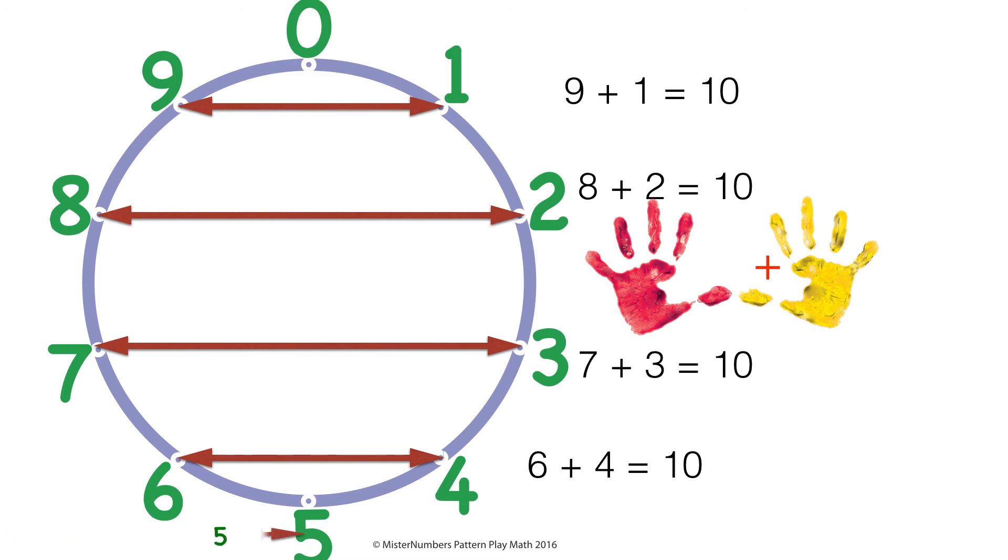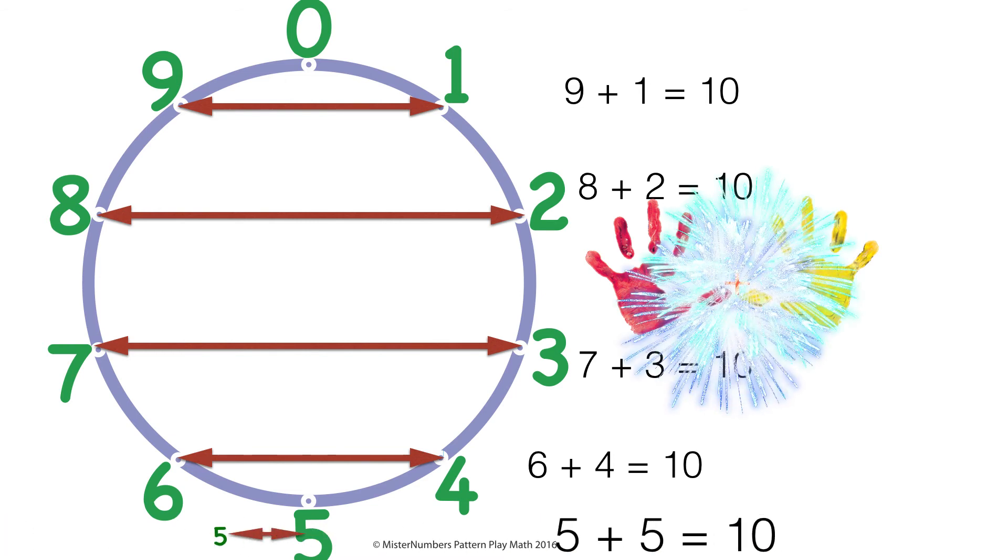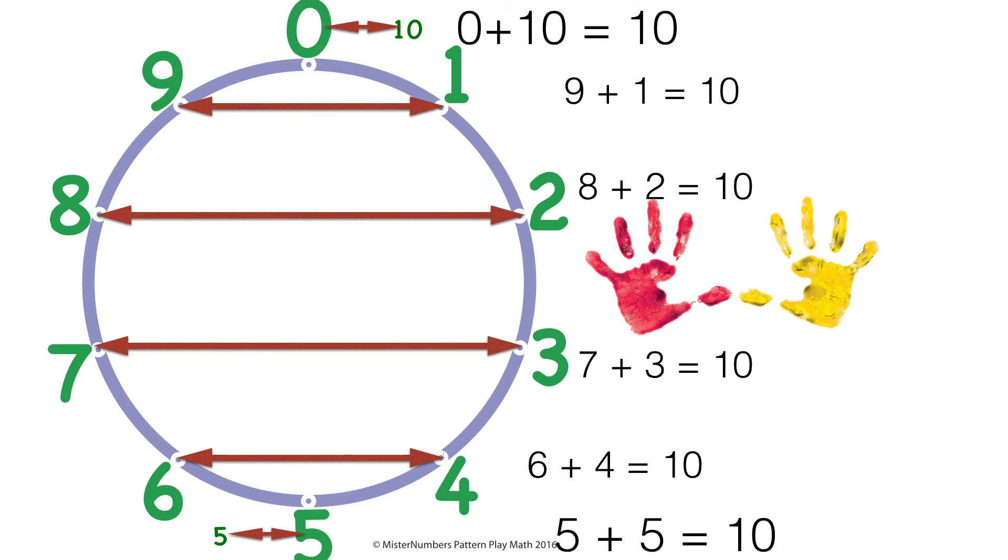Five's all by itself down at the bottom. Well, guess what? Five and five, double five, adds up to ten. And at the top is zero and ten, and zero and ten add up to ten.